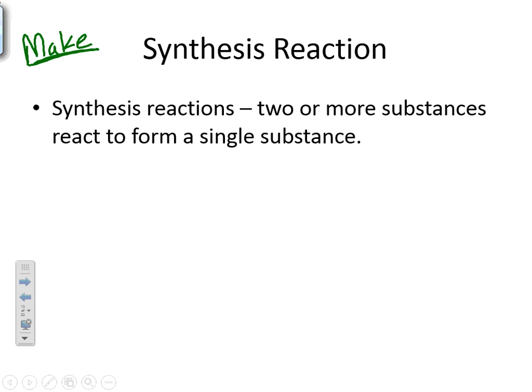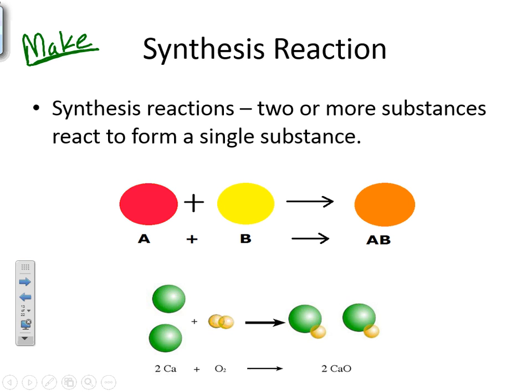We are taking two or more substances and combining them together to make one single substance. So, what is that going to look like? If you have A and B, you are going to get AB. I could take C plus D and get CD. I could take A plus F and get AF. If we take two greens plus two yellows, I'm going to get two green yellows. So, that's a synthesis reaction. I'm combining two things together.